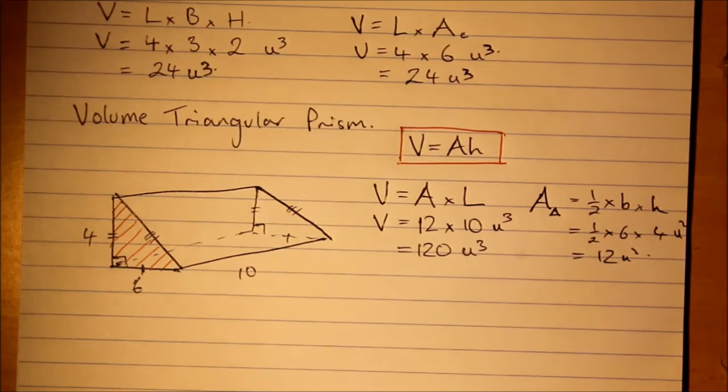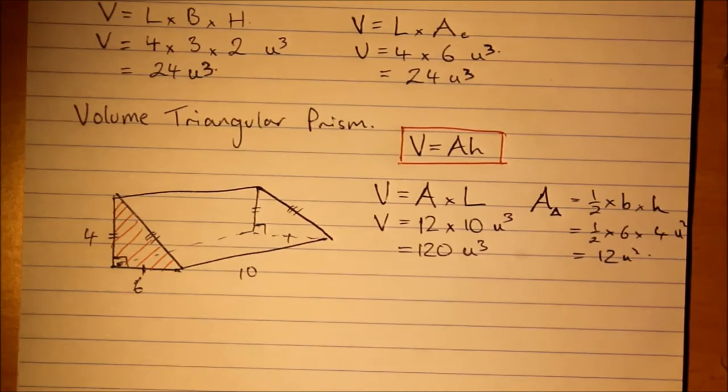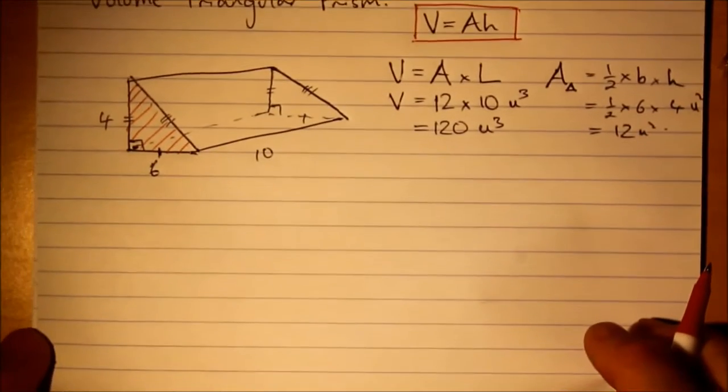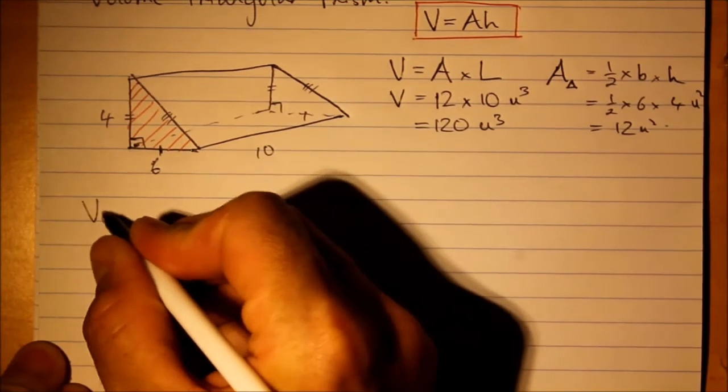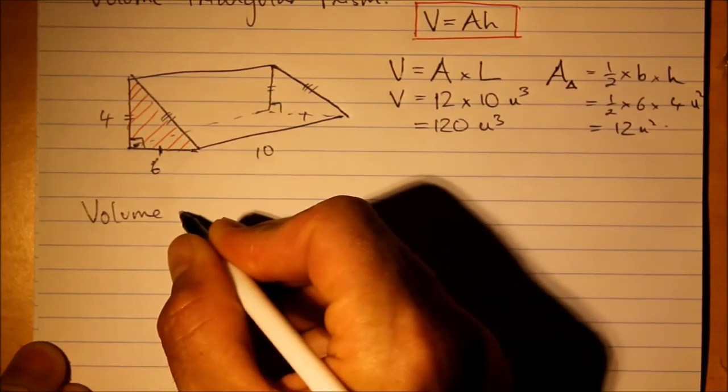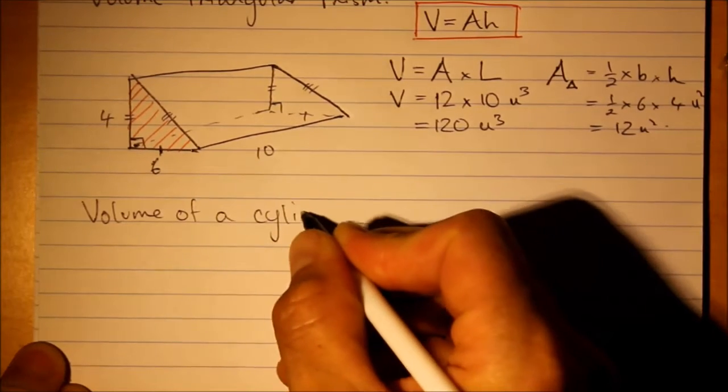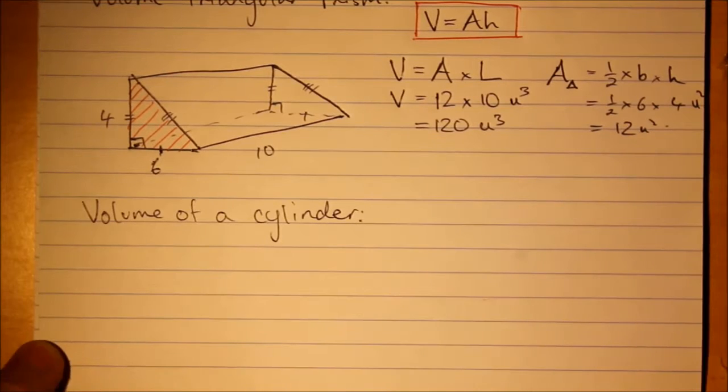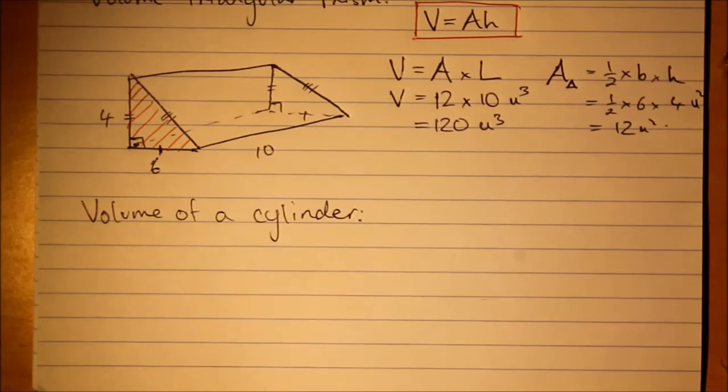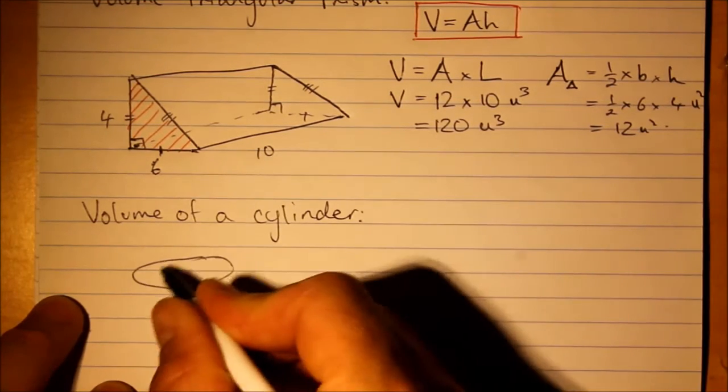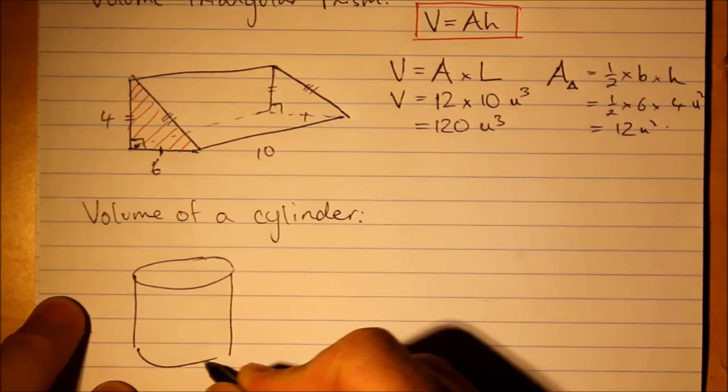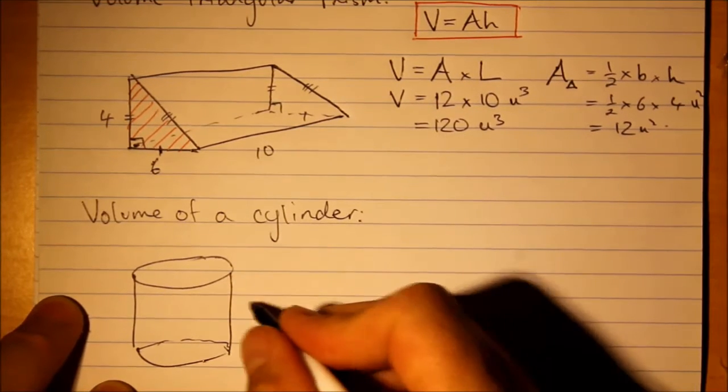Well, there are some other shapes that we'll need to find out the volume of and such as the cylinder. Now, volume of cylinder. Is a cylinder a prism? Technically no, but it follows all the properties of it except for not having straight edges. So, in that sense we can use the same formula.